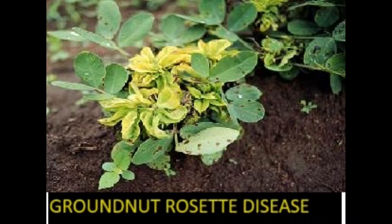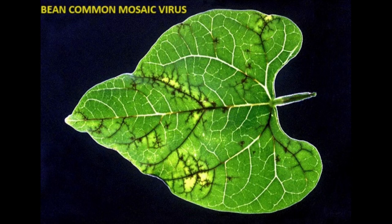Chlorosis is the yellowing of leaves, which may be uniform or appear in specific patterns. Vein clearing refers to the loss of green color along the veins of leaves, creating a clear or yellowish appearance.